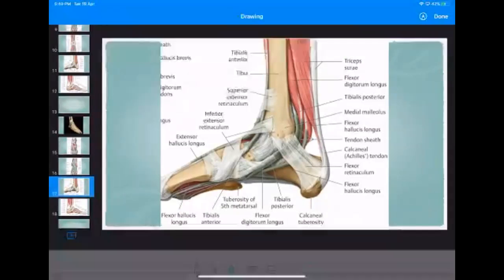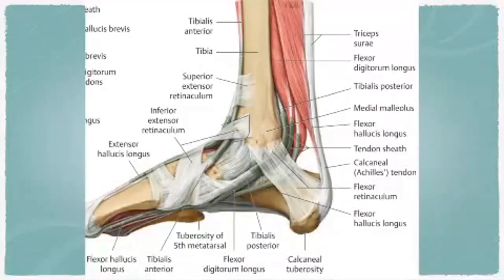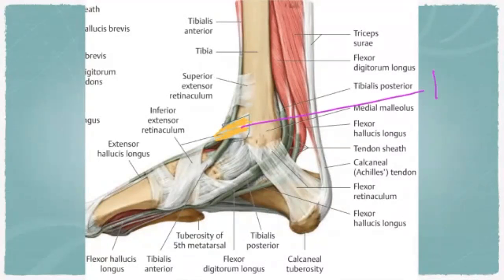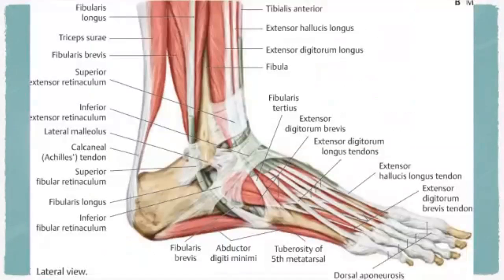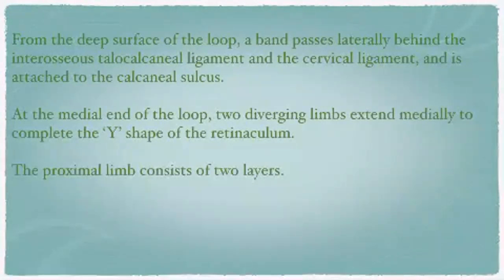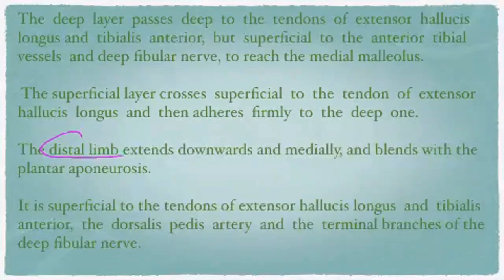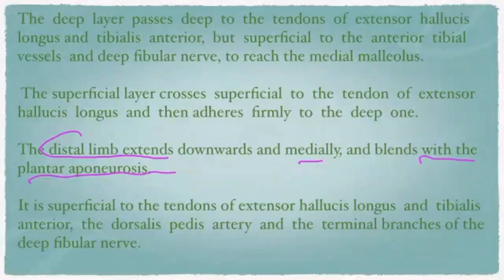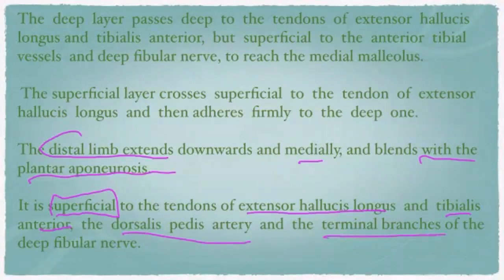The proximal limb and distal limb of the inferior extensor retinaculum can be identified in the specimen. The distal limb extends downwards and medially and blends with the plantar aponeurosis. The distal limb is superficial to extensor hallucis longus, tibialis anterior, dorsalis pedis artery, and the terminal branches of the deep fibular nerve — all of which lie beneath the distal limb of the inferior extensor retinaculum.